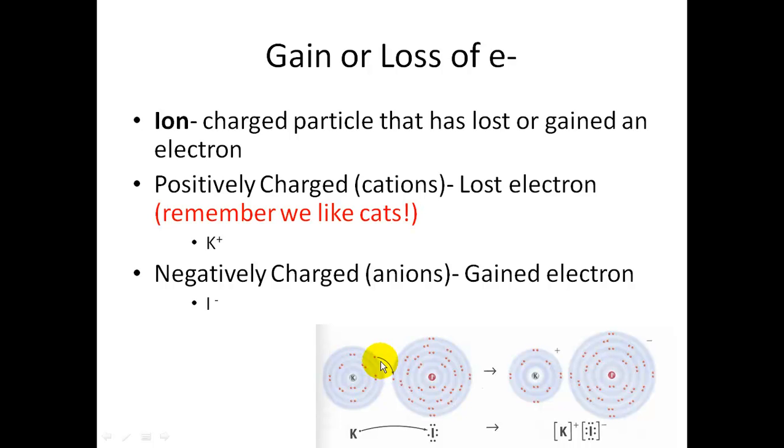So, here's another example here of potassium giving its electron to iodine. Because potassium lost that electron, it is now called a cation, K plus. It has a positive charge, where iodine gained an electron, and now has a negative charge.